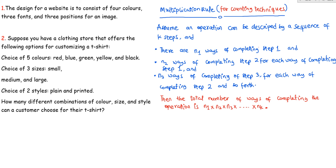For example, assume you want to manufacture a t-shirt. That is our operation: t-shirt manufacturing. To manufacture the t-shirt, we assume there are three steps that we will have to follow. For the first step, you have to choose a color.